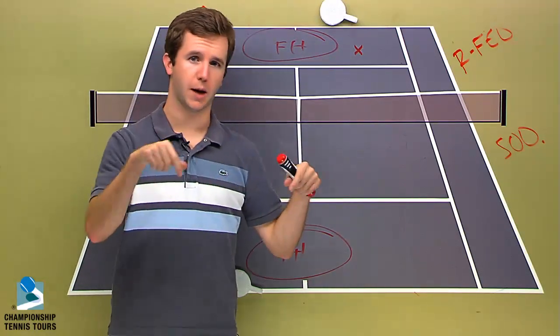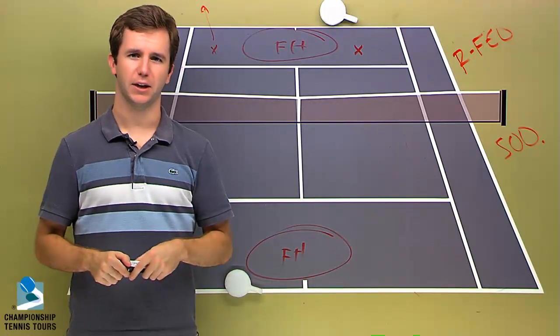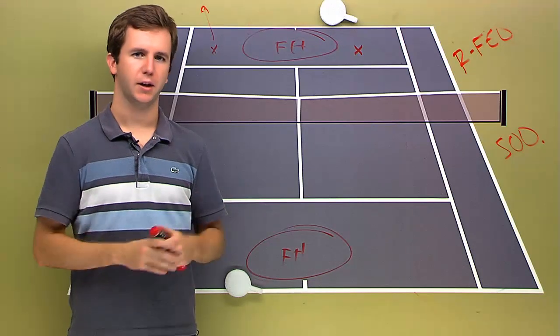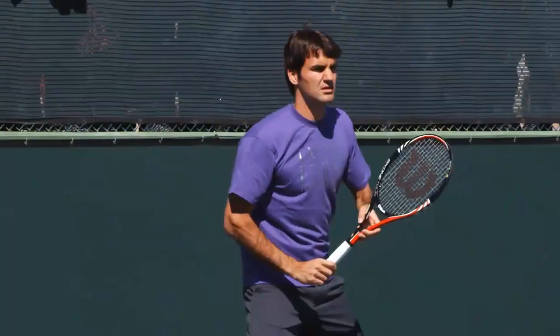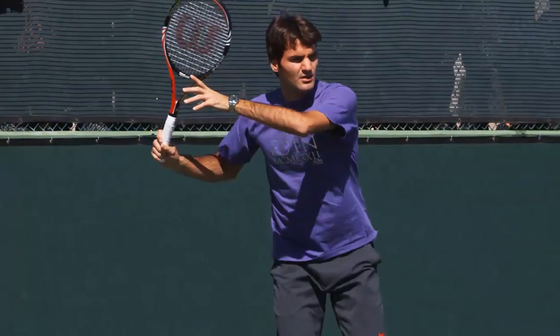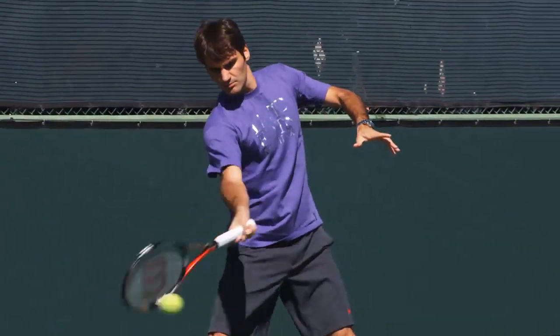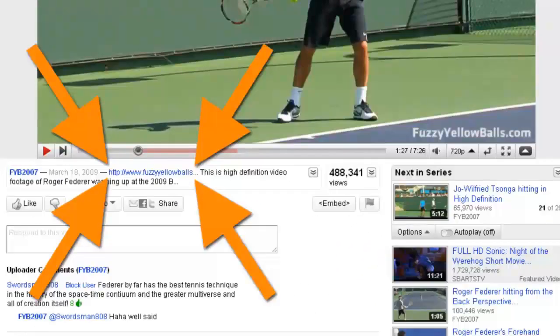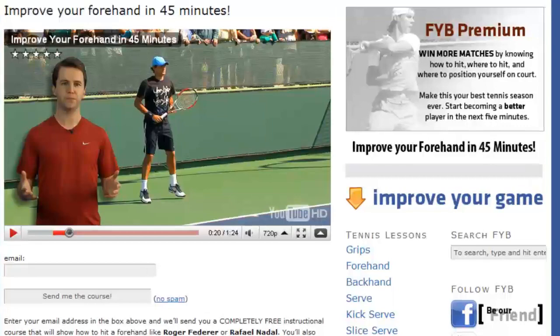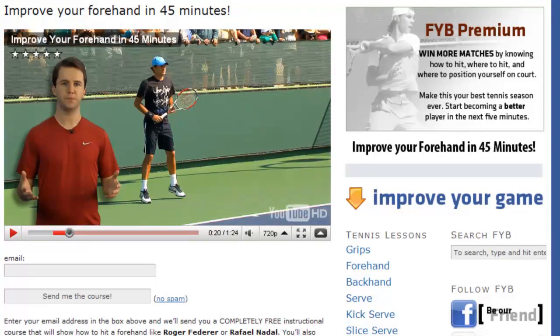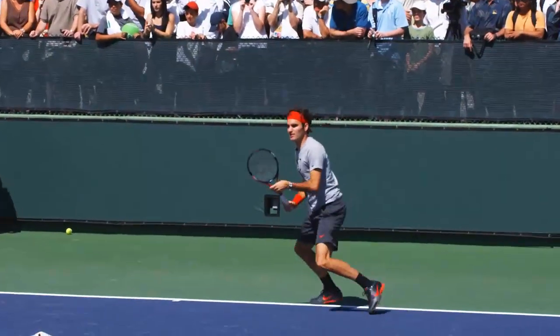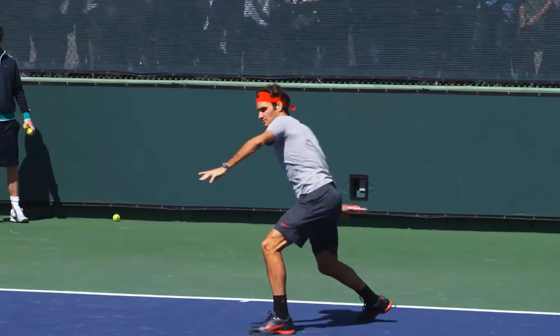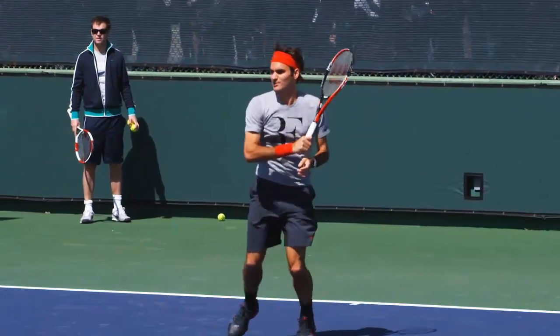So again, just guess the score in the comments below. The first person to get it is going to win that month's subscription to FYB Premium. Did you know that there are only five simple things you need to do to have a textbook forehand like Roger Federer? If you click the link in the description of this video and visit our website, you'll learn why Federer's forehand is so good and how you can copy his technique. And this entire 45 minute lesson is 100% free. Join the thousands who have already learned what these five simple things are and take control of your forehand today.